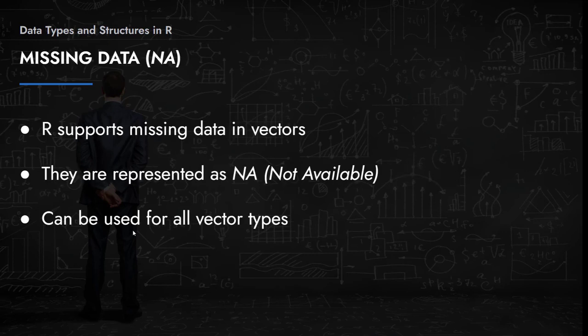How do you represent missing data in R? As with other programming languages, missing data is an important concept to be aware of. R supports missing data in vectors. Missing values are represented using NA — capital N, capital A — an abbreviation for 'not available.' R automatically recognizes this as missing data.